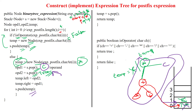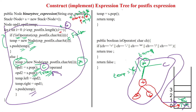Then i is incremented to 5, but there is no element at i=5. So the entire for loop is over and we come out of the loop. Now we are popping the stack — the stack is having the entire tree structure. This entire tree structure is popped and returned. This is the way to construct the expression tree by using the postfix expression. Thanks for watching.